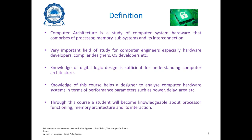Let's formally define what computer architecture is. Computer architecture is the study of computer system hardware that comprises a processor, memory, subsystems, and their interconnections. We don't interpret hardware as something always tangible — in this course you will design hardware that could be converted into a tangible form later. This comprises the processor responsible for processing data, memory for storing data, and peripheral subsystems linked with the processor and memory.